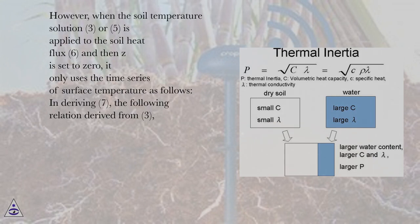However, when the soil temperature solution (Equation 3 or 5) is applied to the soil heat flux (Equation 6), and then z is set to 0, it only uses the time series of surface temperature as follows: